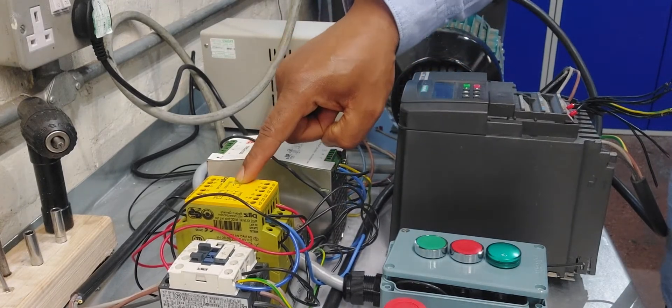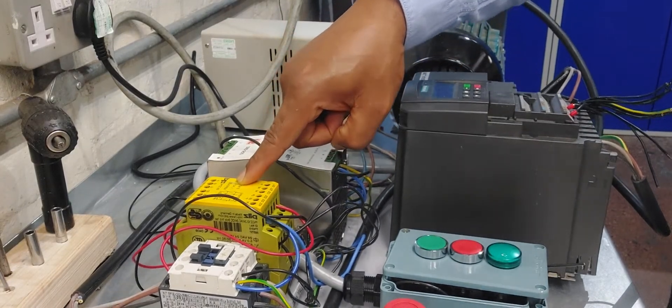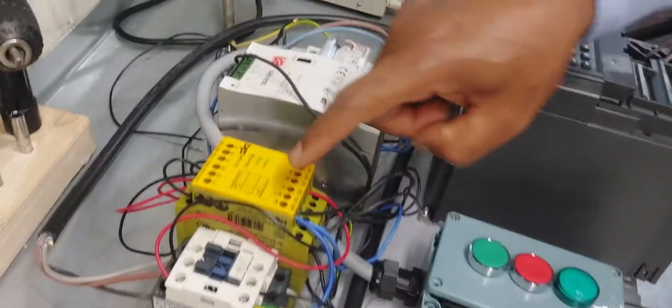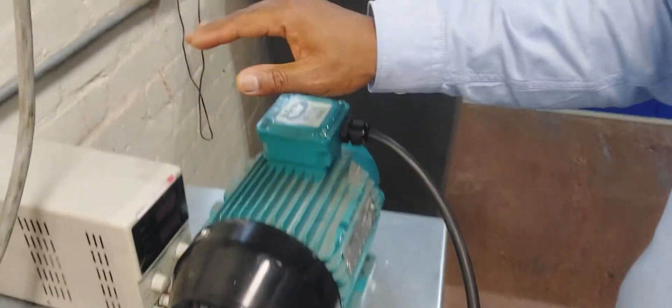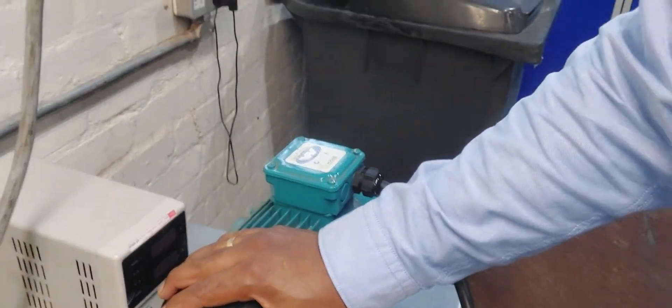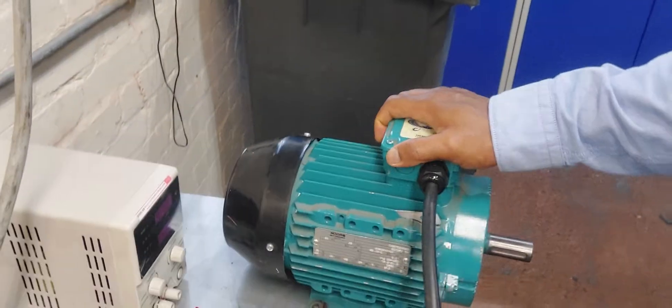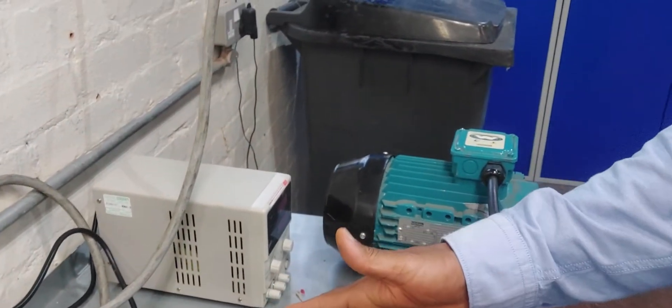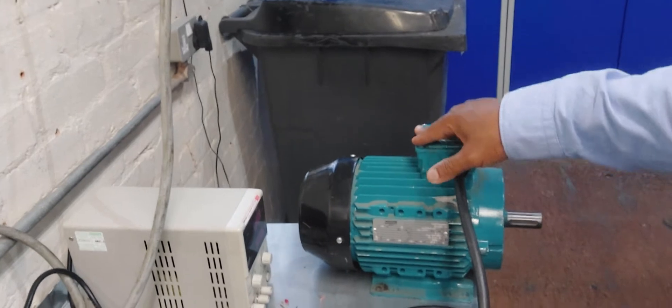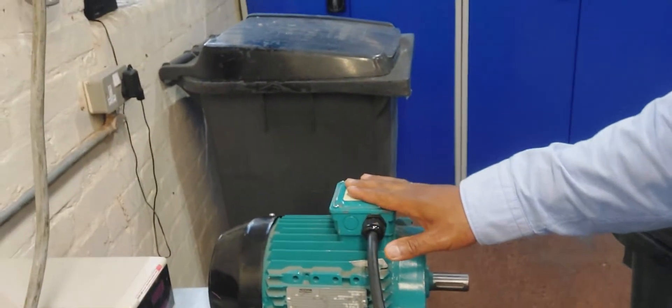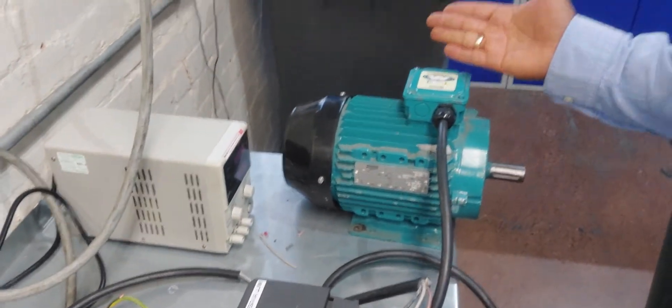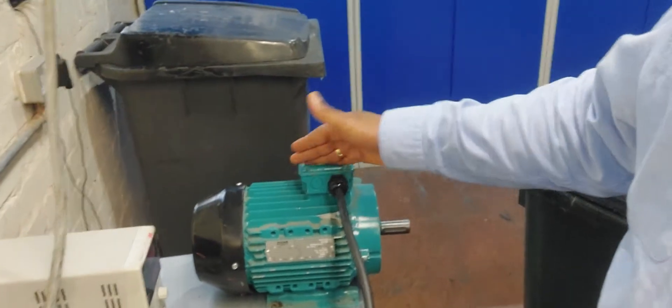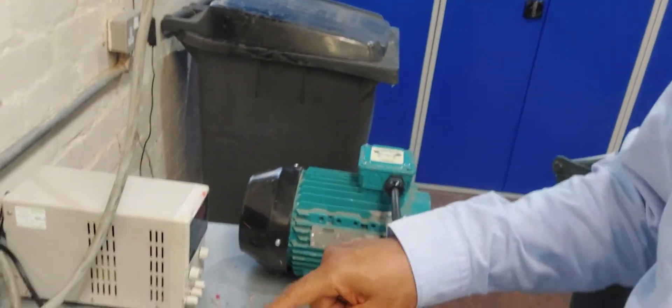As you can see here, we have the PILZ PNOZ X3 monitoring the system. We have an electric motor running a conveyor. This is an inverter, a frequency inverter that controls the motor. This runs on 50 hertz in the UK and EU, or 60 hertz in America.